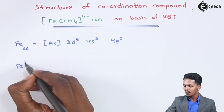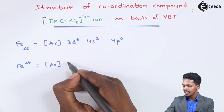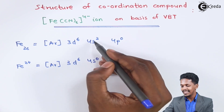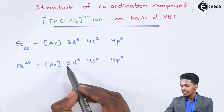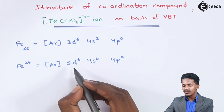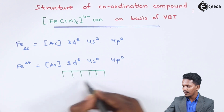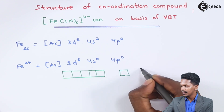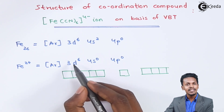So we write the electronic configuration of Fe2+ as argon 18, 3d6, 4s0, because the electrons are lost from that orbital. So we have 3d6, 4s0, and 4p0. The d orbital consists of five orbitals, and talking about the d orbital, it contains six electrons.